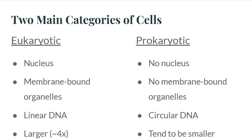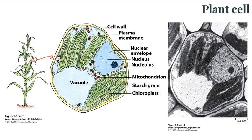On average, eukaryotic cells tend to be about four times larger than prokaryotic cells. Prokaryotic cells have no nucleus, no membrane-bound organelles, and their DNA is a single circular chromosome. Now we're going to skip over to plant cells — normally I talk about different types of eukaryotic cells, but we're just moving on to plants.